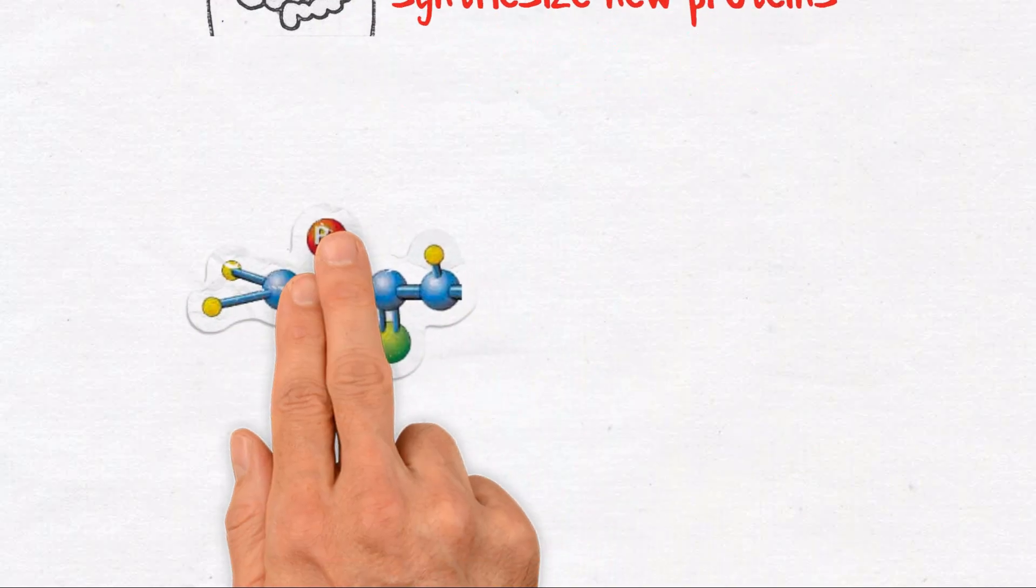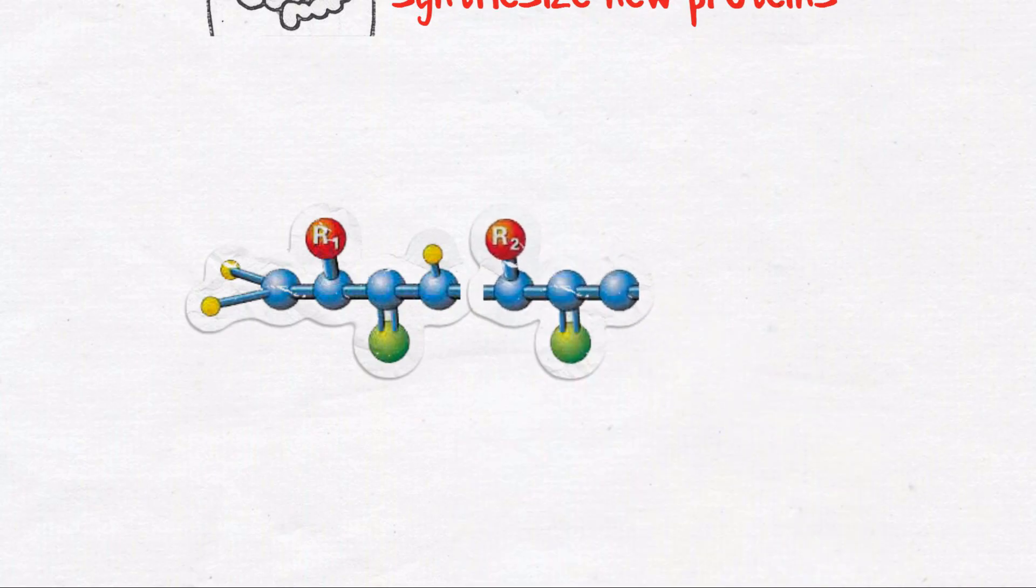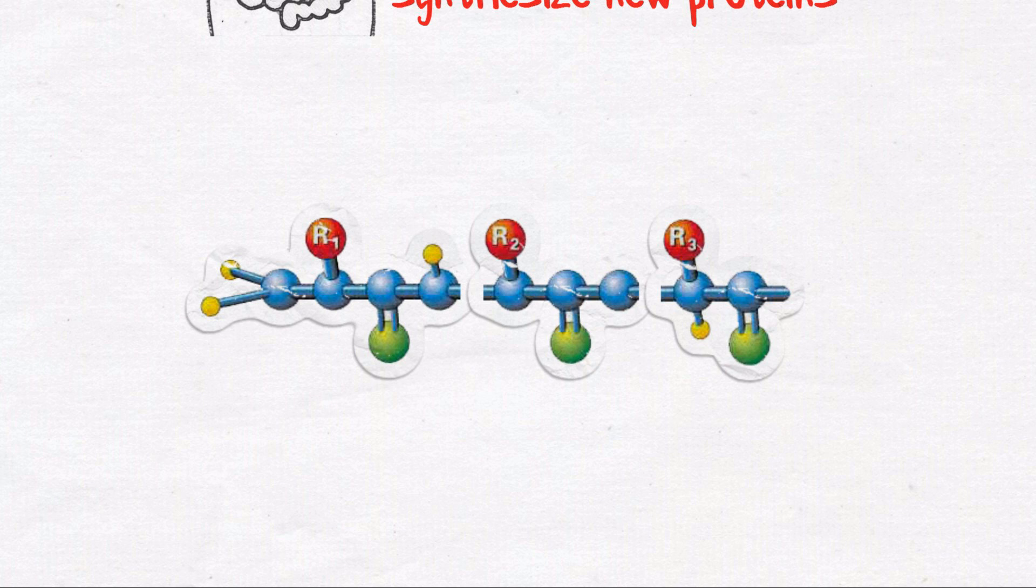Proteins are made of amino acids linked end to end, like beads on a necklace. The links in the chains are amino acids, commonly known as the building blocks of protein.